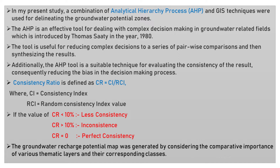The AHP is an effective tool for dealing with complex decision-making in groundwater-related fields, which was introduced by Thomas Saaty in the year 1980. The tool is useful for reducing complex decisions to a series of pairwise comparisons and then synthesizing the results. Additionally, the AHP tool is a suitable technique for evaluating the consistency of the results, consequently reducing the bias in the decision-making process.